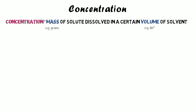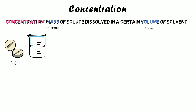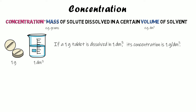In some questions you might have to convert centimetres cubed to decimetres cubed. So if we have one gram of our solute and one decimetre cubed of our solvent, and we dissolve that one gram of chemical in one decimetre cubed, the concentration of the solution formed is one gram per decimetre cubed.